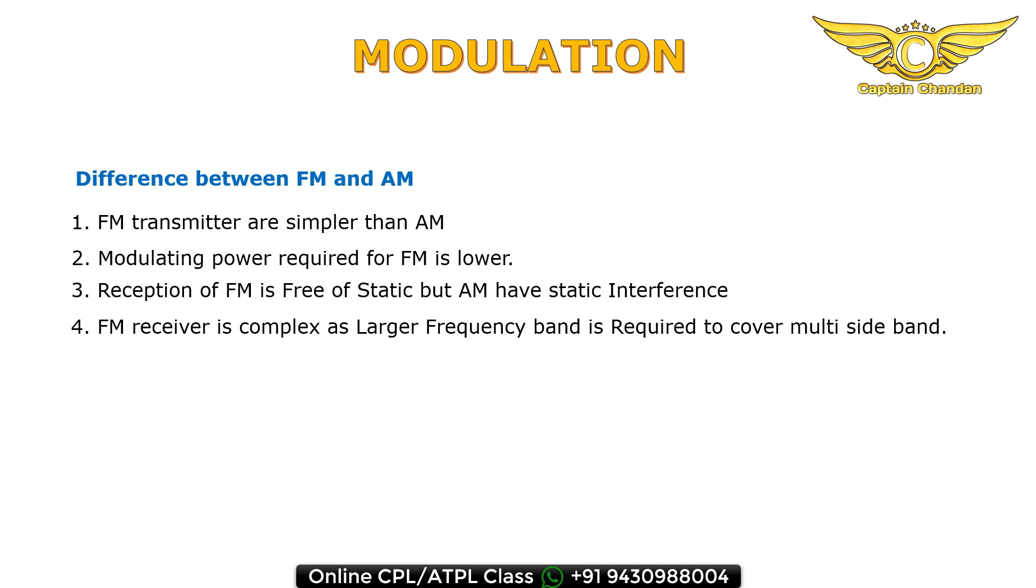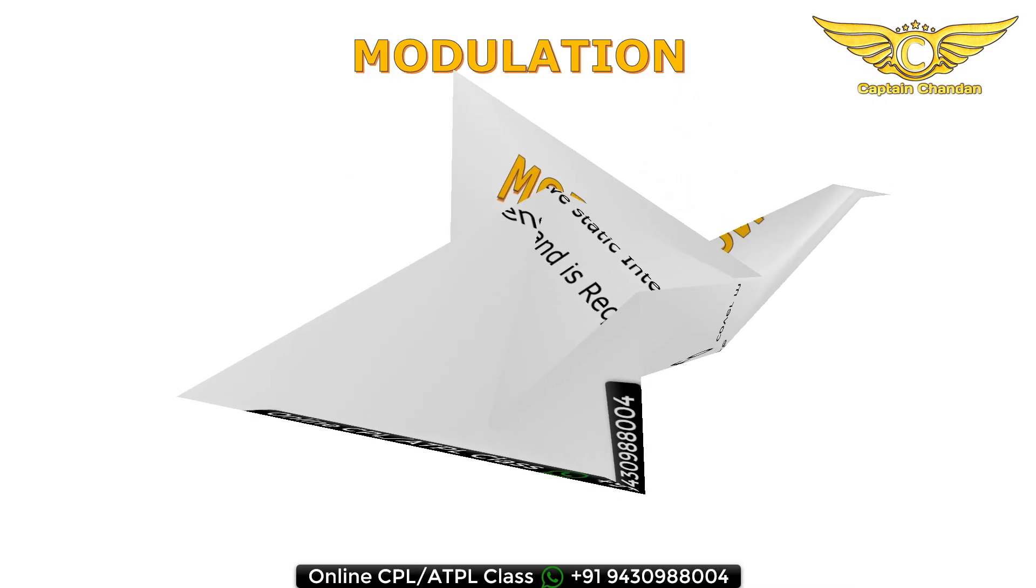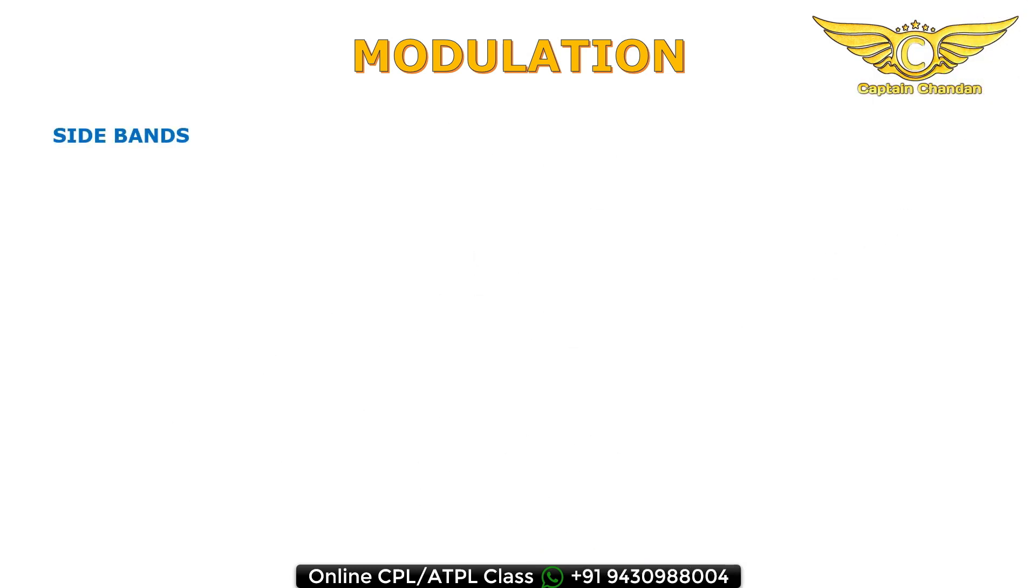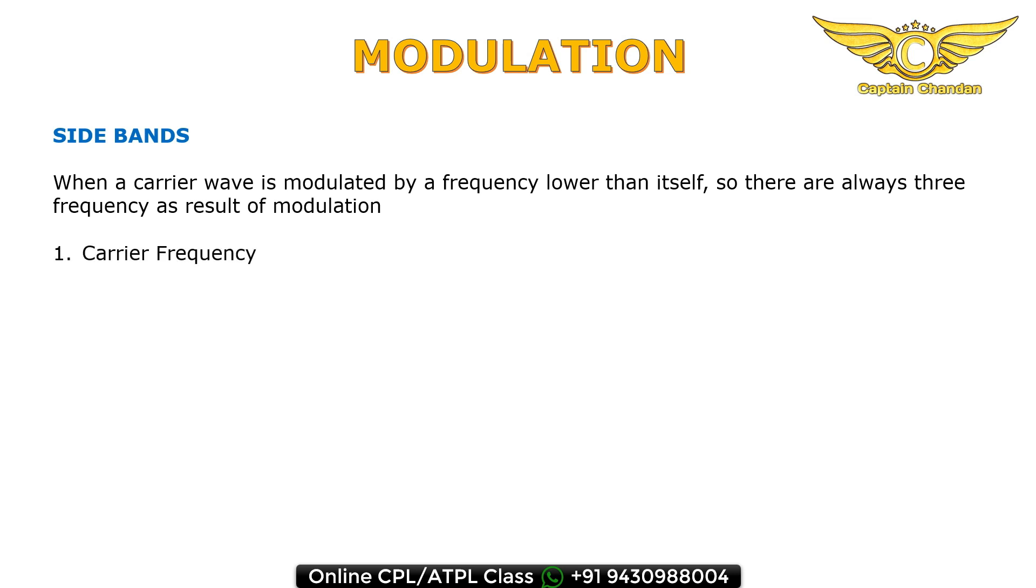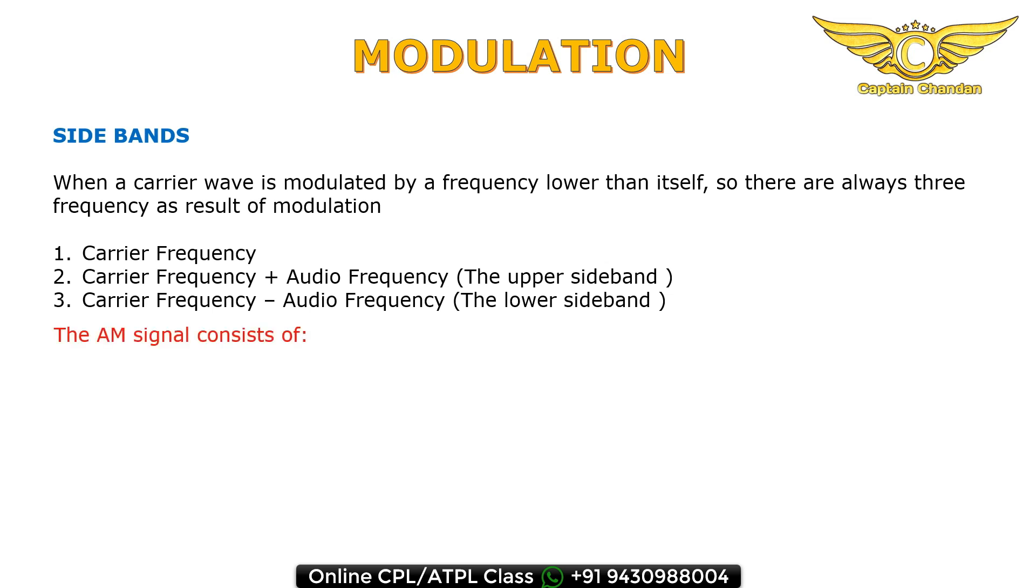What is sideband? When a carrier wave is modulated by a frequency lower than itself, there are always three frequencies as a result of modulation: first is carrier frequency, second is carrier frequency plus audio frequency, that is upper sideband, and third is carrier frequency minus audio frequency called lower sideband. For example, an AM signal with 500 kilohertz carrier frequency, 501 kilohertz is the upper sideband, 499 kilohertz is the lower sideband. The bandwidth is 2 kilohertz.